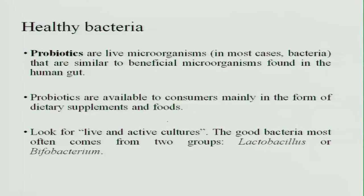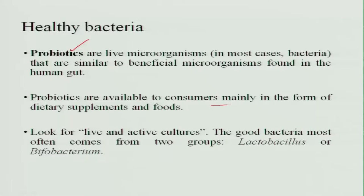There are healthy bacteria produced in the large intestine and intestinal tract. Probiotics are live organisms — mostly bacteria — similar to the bacteria present in the human gut. People are advised to take curds which have probiotics in them. These are now available to consumers as dietary supplements and foods. Good bacteria most often comes in two forms: mainly Lactobacillus and Bifidobacterium. When you prepare batter and leave it for fermentation, it develops Lactobacillus and Bifidobacterium — that is why fermented foods are very good for health.